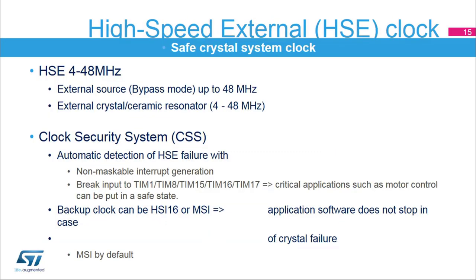The high-speed external oscillator provides a safe crystal system clock. The HSE supports a 4 to 48 MHz external crystal or ceramic resonator, and also an external source in bypass mode. A clock security system allows automatic detection of HSE failure. In this case, a non-maskable interrupt is generated and a brake input can be sent to timers in order to put critical applications such as motor control in a safe state. When an HSE failure is detected, the system clock is automatically switched to an internal oscillator. The HSI16 or the MSI ensures the application software does not stop in case of crystal failure.